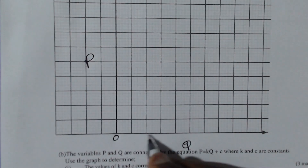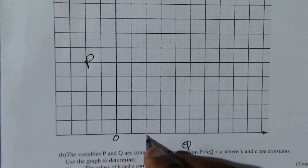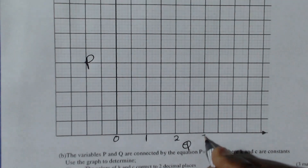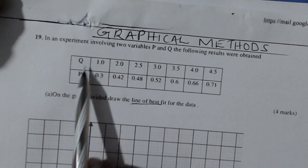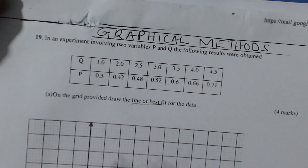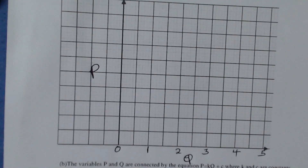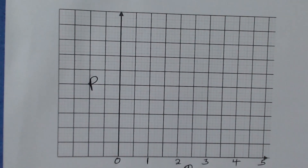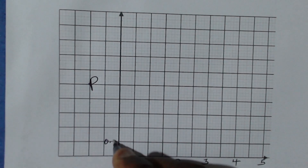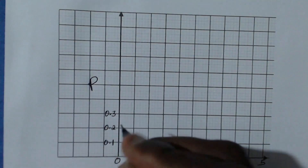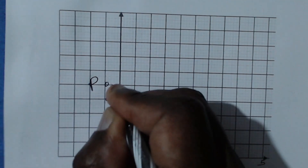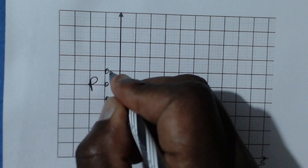Looking at the space available, we can use an interval of two centimeters to represent one unit, giving us 1, 2, 3, 4, and 5 on the x-axis. For p, the smallest value is 0.3 and the highest is 0.71, so using an interval of 0.1 will be fine: 0.1, 0.2, 0.3, 0.4, 0.5, 0.6, 0.7, 0.8.